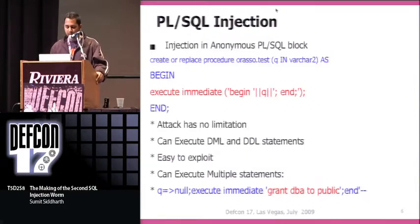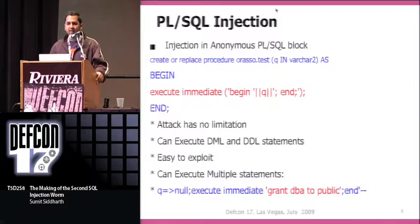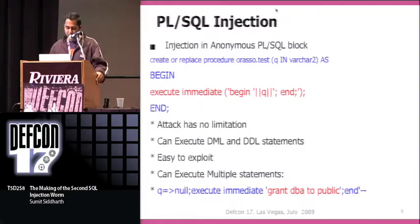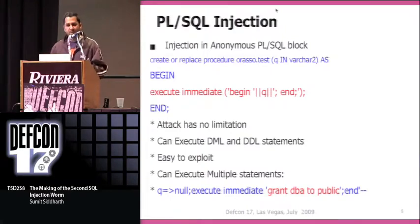You can provide that parameter Q as null and then use execute immediate — maybe grant DBA to public. Over here you don't have any restrictions. You can use semicolons and execute multiple statements. Exploitation is fairly straightforward.